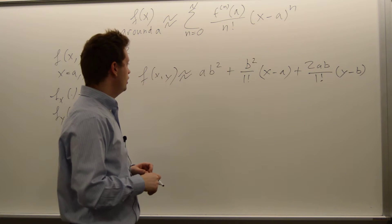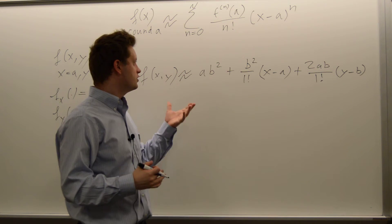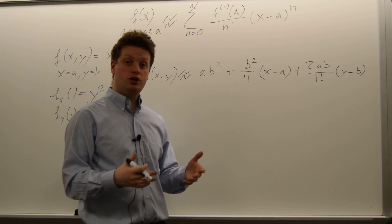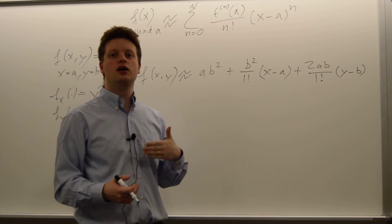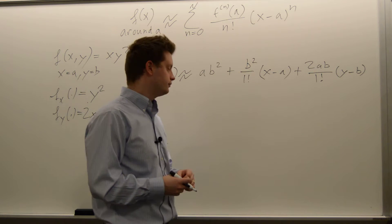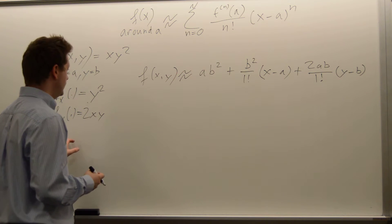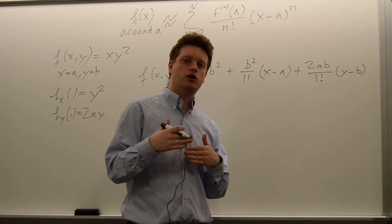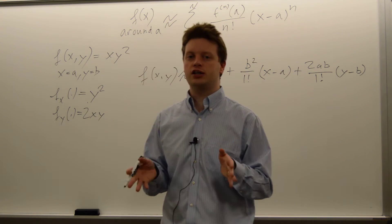Now let's do the second-order Taylor approximation with two variables. We need to look at the Hessian of this function, meaning the second-order conditions. Let's write down three of them — since two are the same, we only need three.